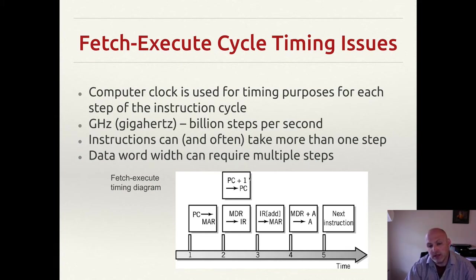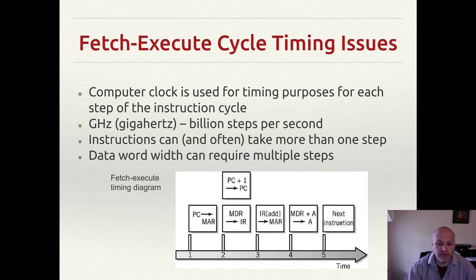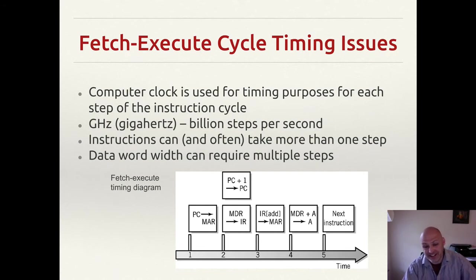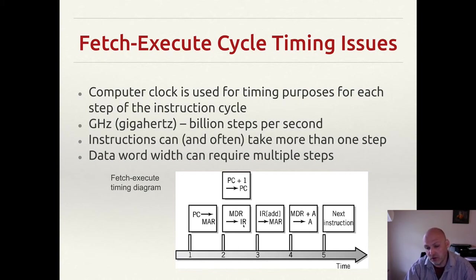We've already taken a proactive step to save ourselves one whole cycle: incrementing the program counter can happen asynchronously. Once we've used the contents of the program counter to retrieve the instruction, we can increment it — there's no reason to wait, wasting another cycle. If you design a small adder that handles incrementation wired directly with the program counter, you can do this at the same time as something else. That saves a whole clock cycle, so instead of five cycles, this instruction now takes four.